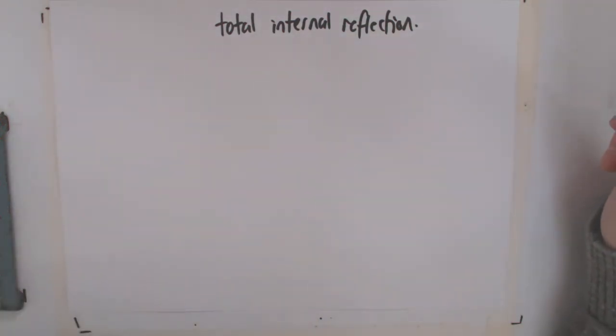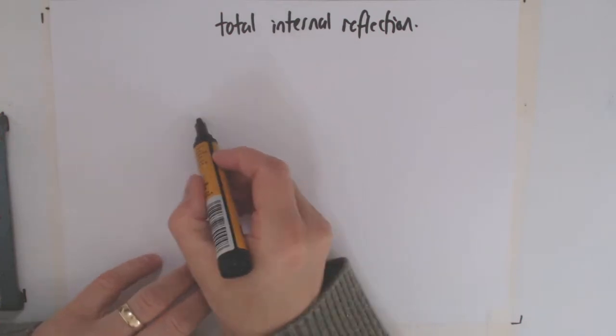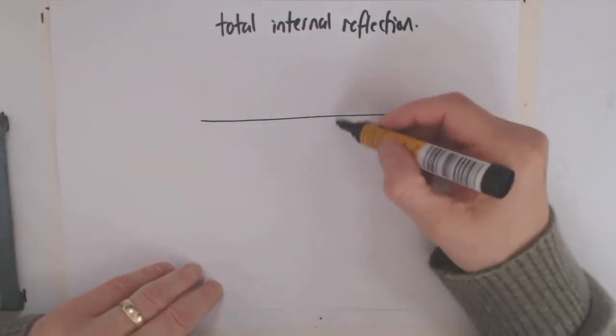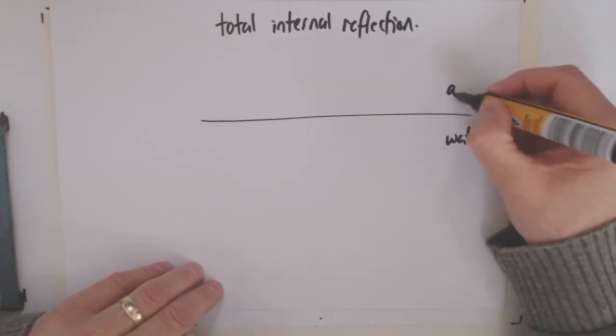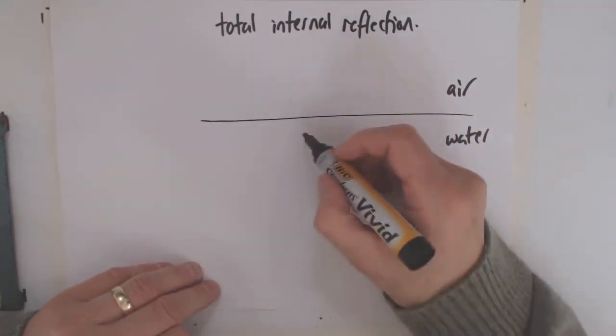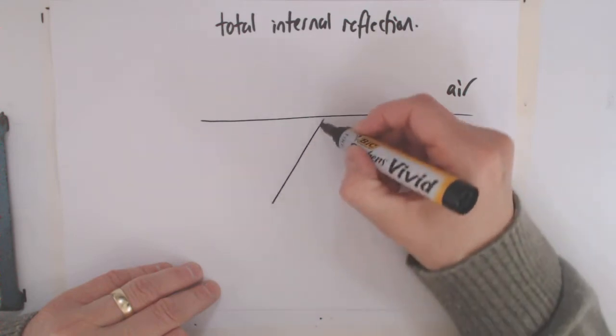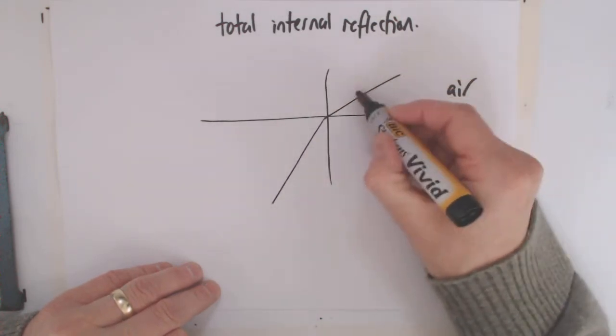What I want to look at here is called total internal reflection. We were looking at where we had a dense medium, we'll call it water, and a less dense medium on top, we'll call it air. We saw that when we had a ray hitting the surface, it bent away from the normal.